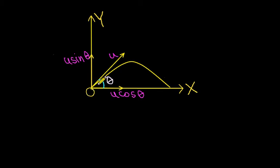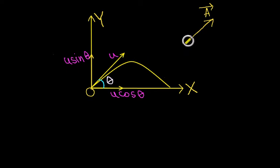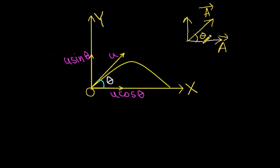In vectors, we know that any single vector can be resolved into two components. Any vector is named by an alphabet along with an arrow sign above it. A vector can be resolved into two components — one along the x direction and the other along the perpendicular direction. If the vector makes an angle theta with one direction, the x component becomes a cos theta and the perpendicular component becomes a sin theta. This is known as the rectangular resolution of vectors.